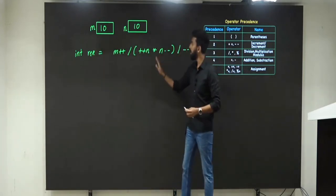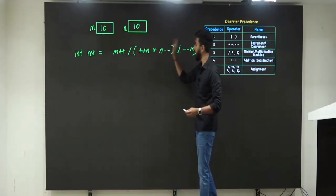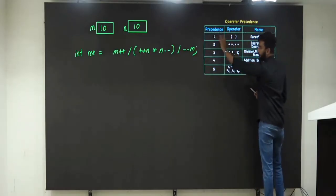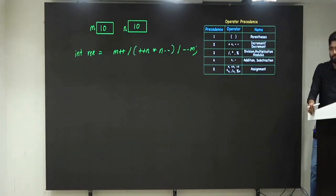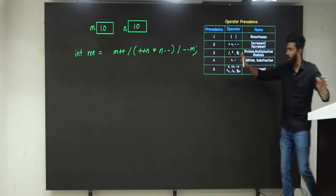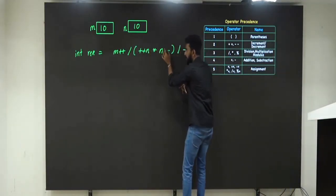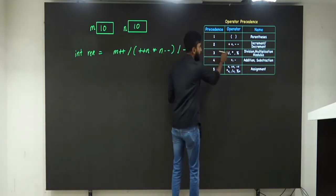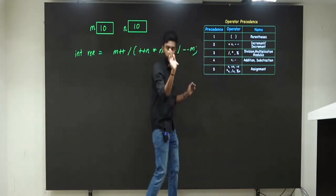Incrementation is there, division is there, parenthesis, multiplication is there. What is the first priority? Parenthesis. Which means whatever is inside parenthesis I should solve first. Now going inside the parenthesis: incrementation, multiplication, decrementation. Which has higher priority — multiplication or incrementation/decrementation? Incrementation/decrementation.